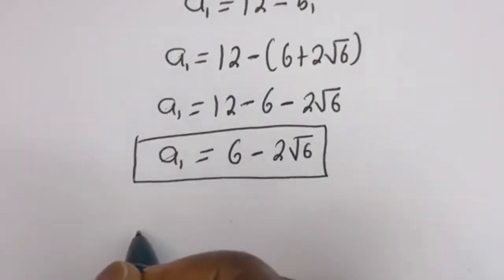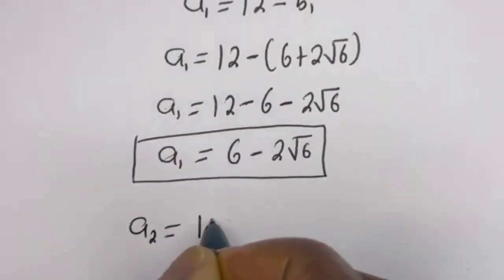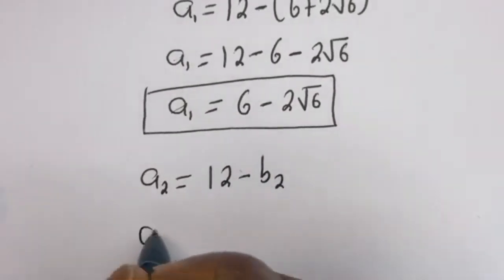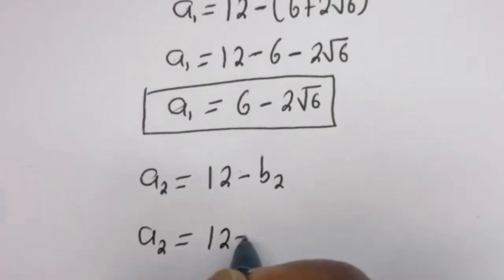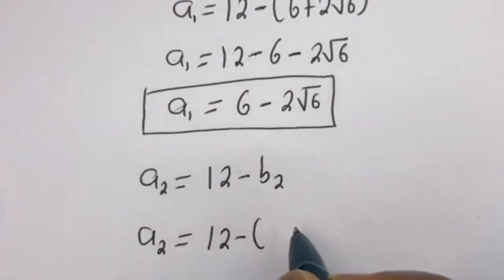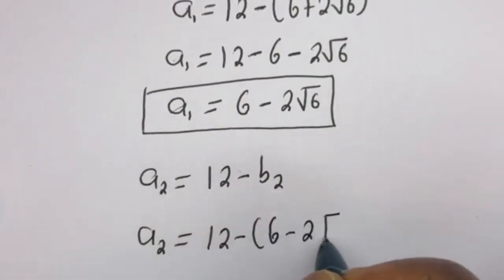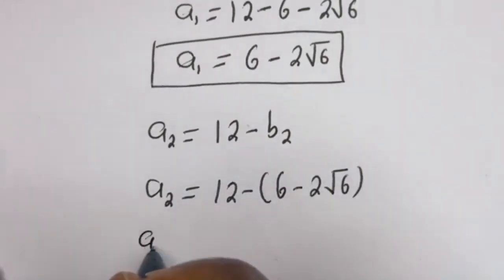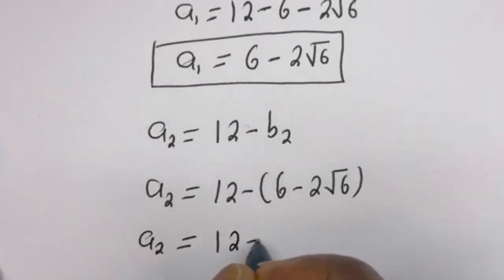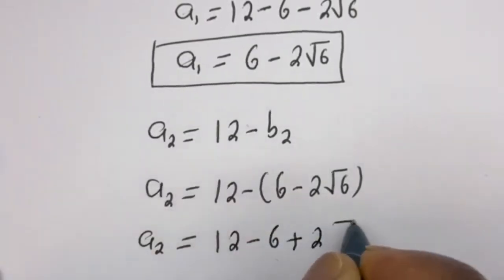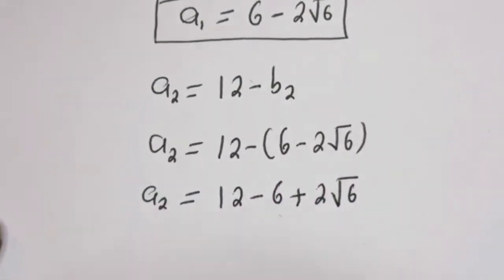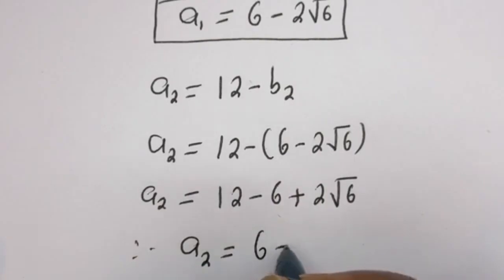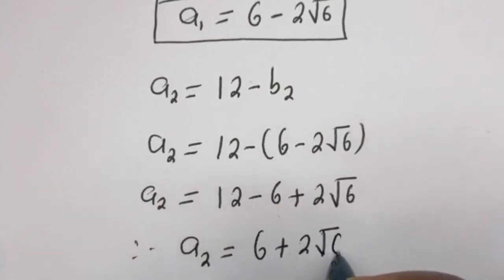Now let's solve for a2. a2 is equal to 12 minus b2. So a2 equals 12 minus (6 minus 2 root 6), which gives 12 minus 6 plus 2 root 6. Therefore a2 is equal to 6 plus 2 root 6.